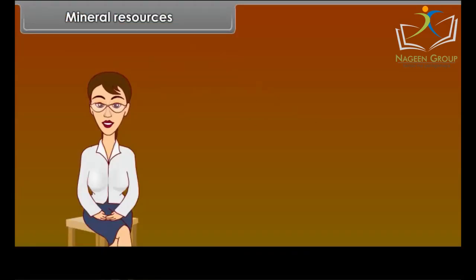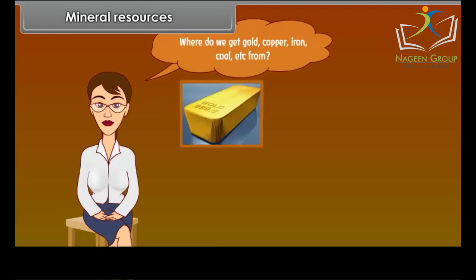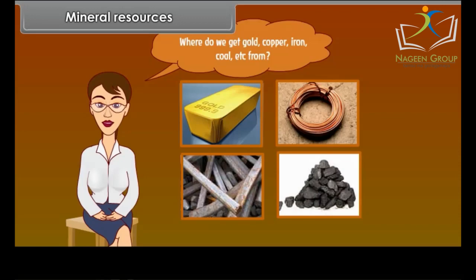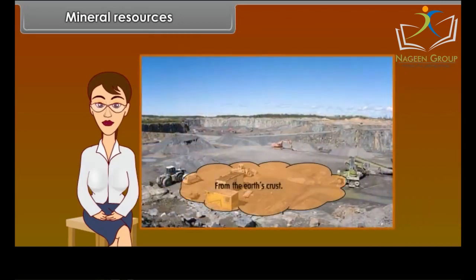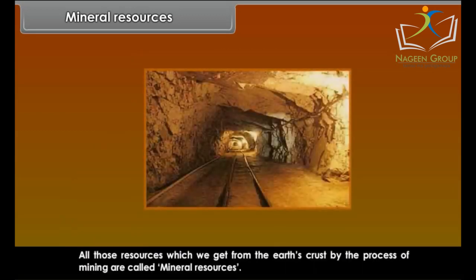Mineral resources come from the earth's crust. We get gold, copper, iron, coal, etc. from the interior of the earth's crust. All those resources which we get from the earth's crust by the process of mining are called mineral resources.